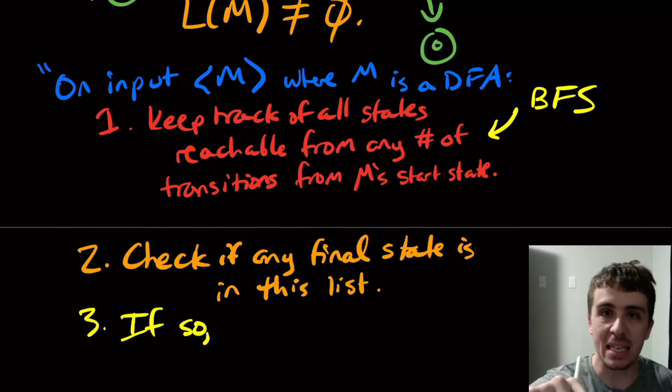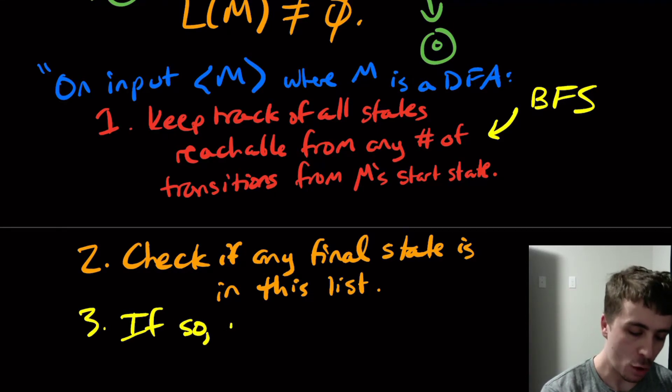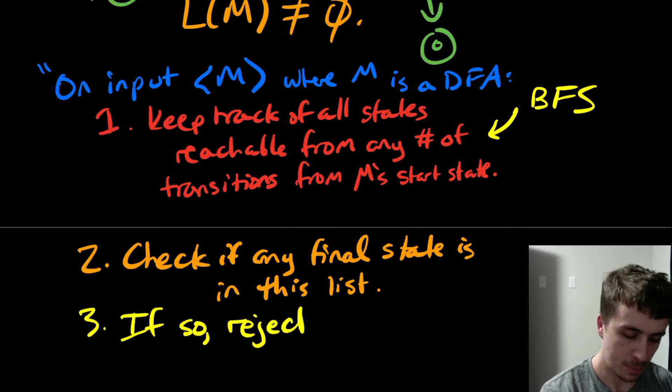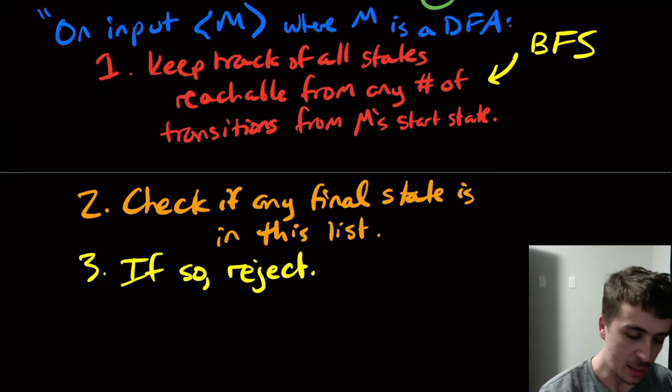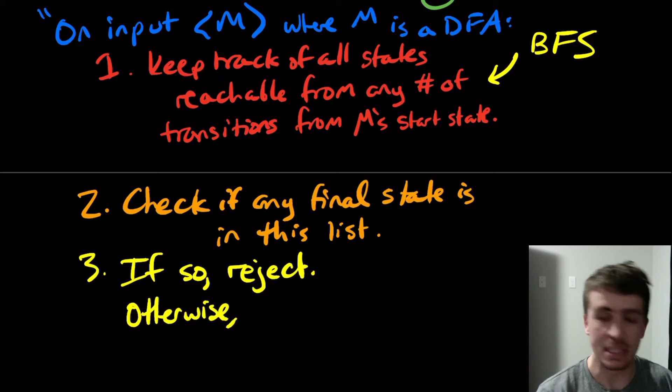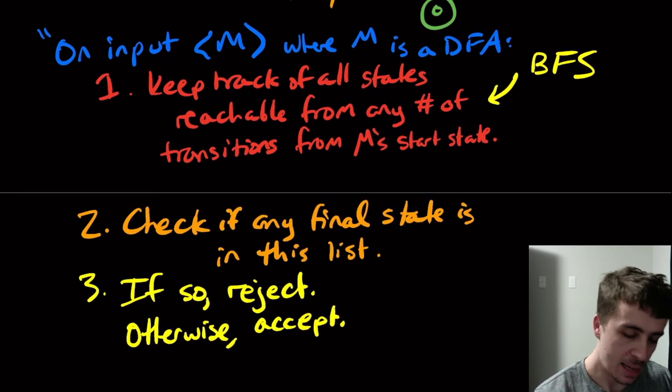If there is a final state in this list, then the language is not empty. And so we should say reject, no, this thing has not empty language. And otherwise, which means that there are no final states in this list, which means therefore its language is empty, we will say accept. And that's it.